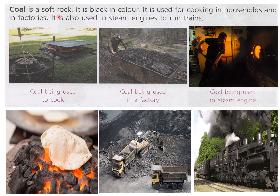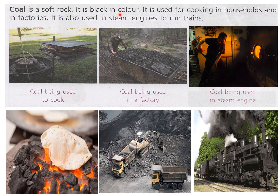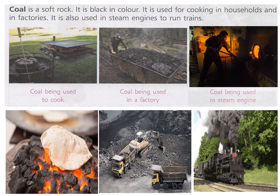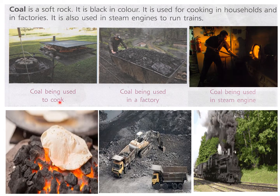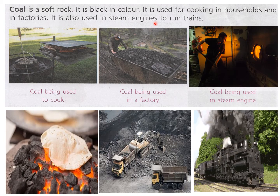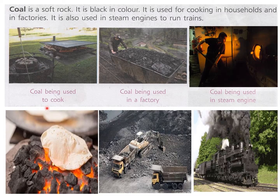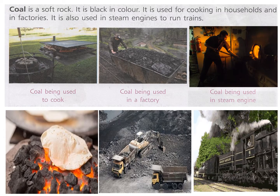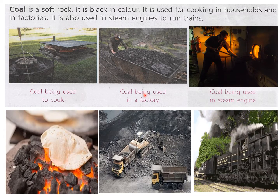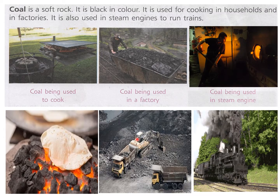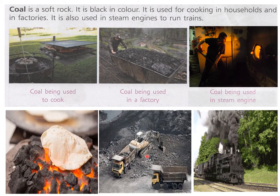Coal is a soft rock. It is black in color. You can see coal being used here — you can see different types of coal being used. It is used for cooking in households, and in factories it is being used for generating power or heat.